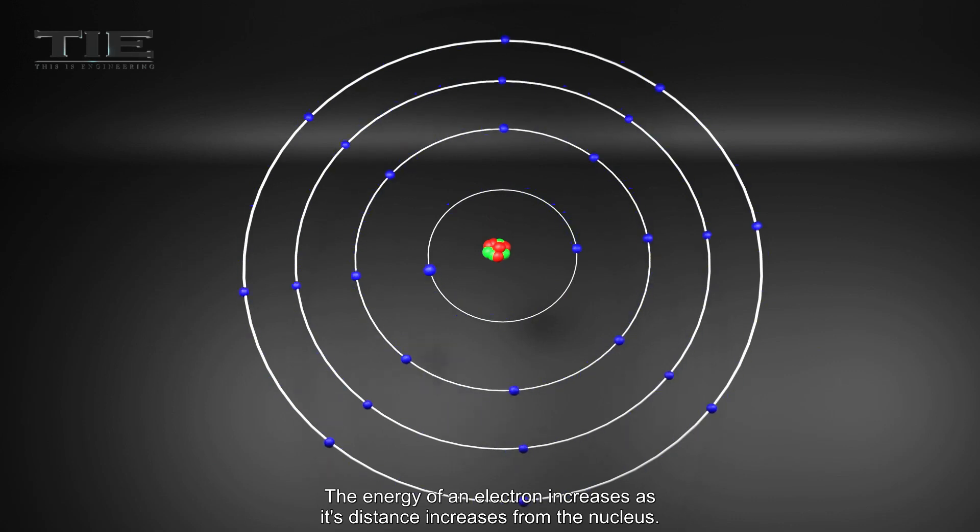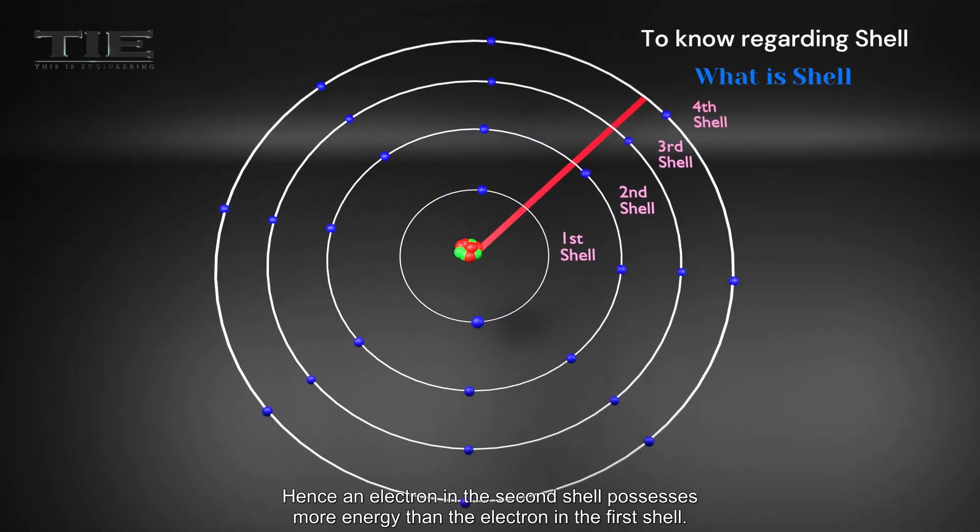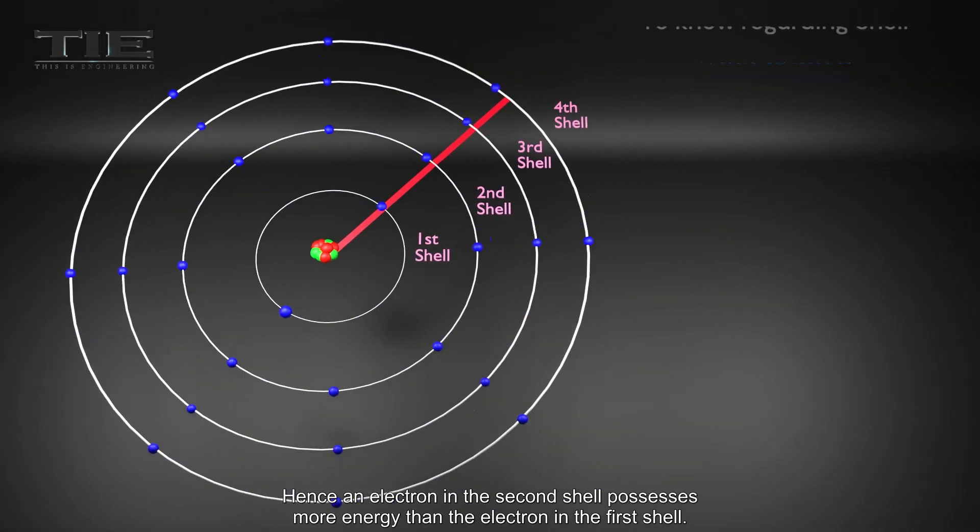The energy of an electron increases as its distance increases from the nucleus. Hence, an electron in the second shell possesses more energy than the electron in the first shell.